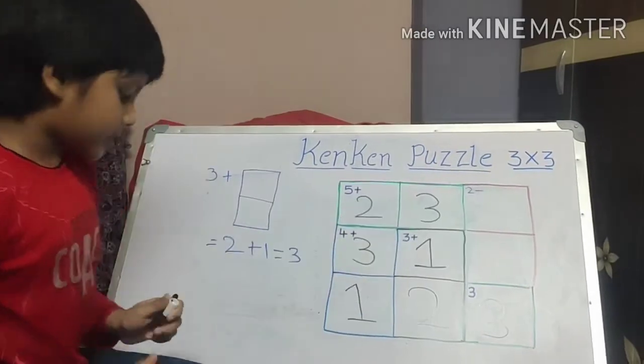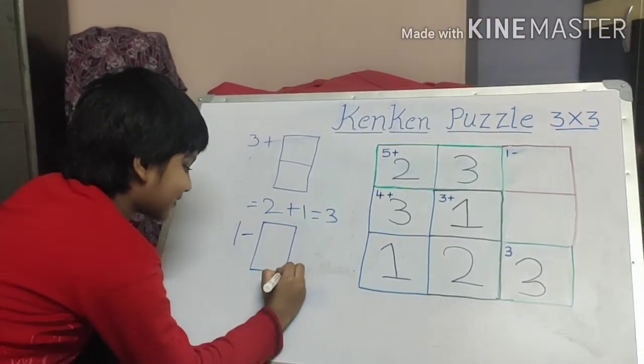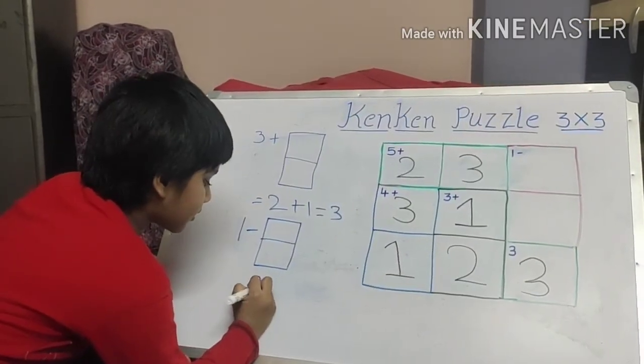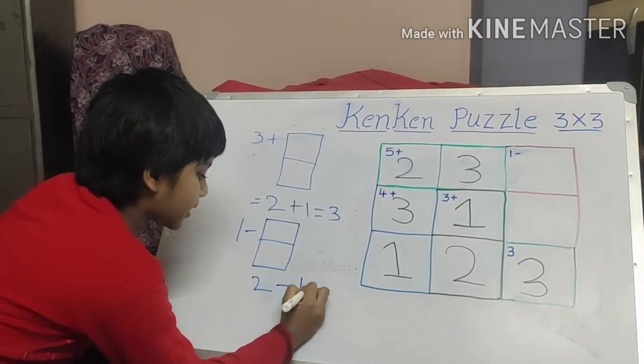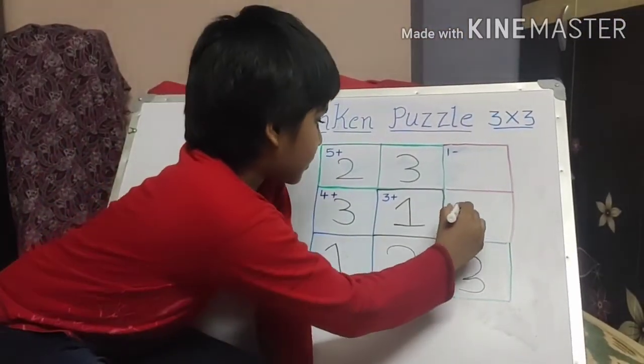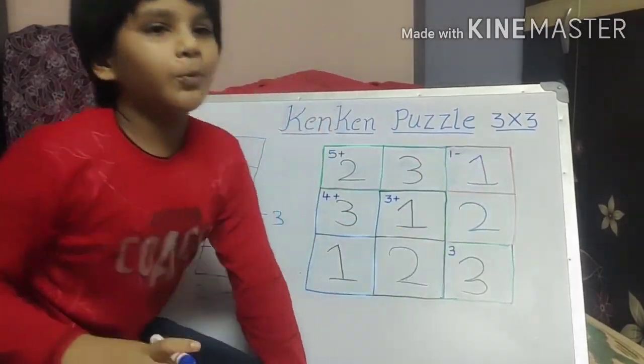Two minus one is equal to one. Two minus one is equal to one.